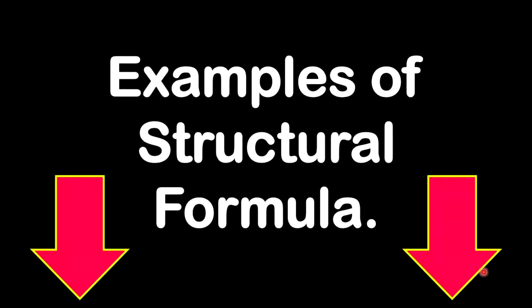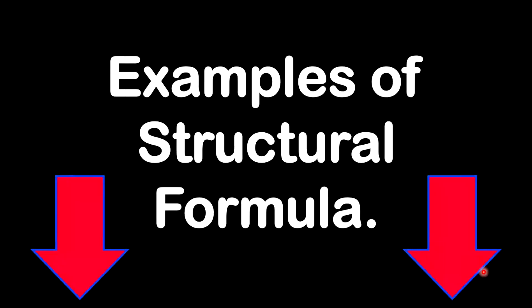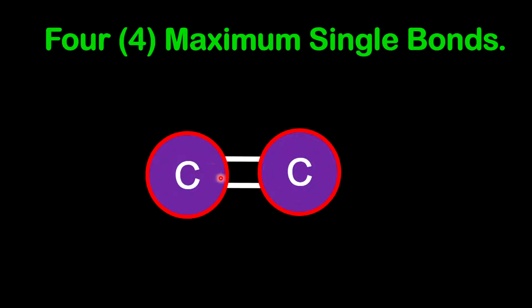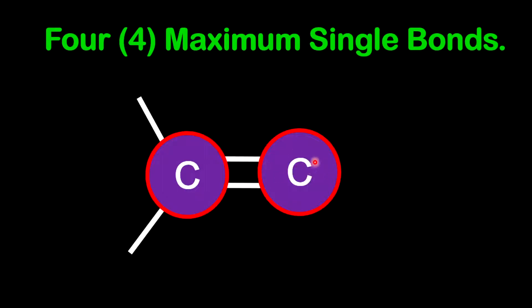Before looking at structural examples for alkenes, a quick reminder: between at least two carbon atoms there must be a double bond. For any given carbon atom there must be a maximum of 4 bonds — think of it as 4 lines. Since we have 2 lines for the double bond on each of those carbons, each can only have 2 more lines. Every carbon atom must have 4 total lines around it.